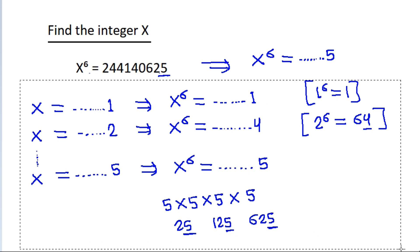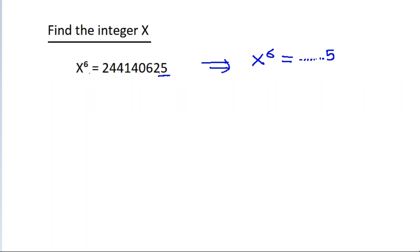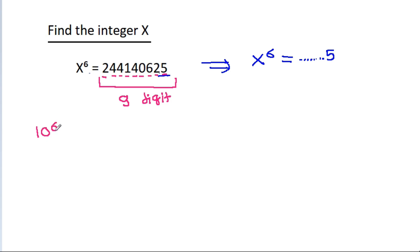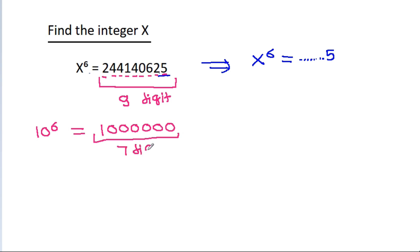Now, the total number of digits in x power 6, which is 244140625, is 1, 2, 3, 4, 5, 6, 7, 8, and 9 — so we have 9 digits. And 10 power 6 has 7 digits.